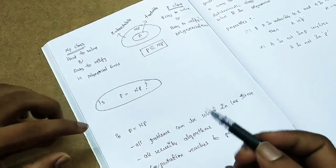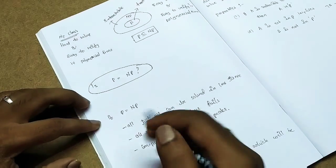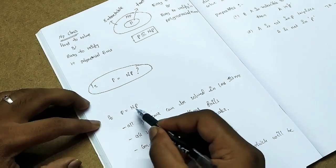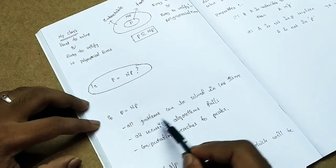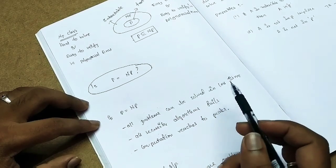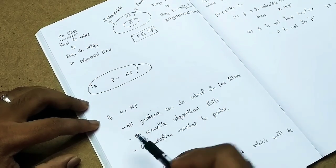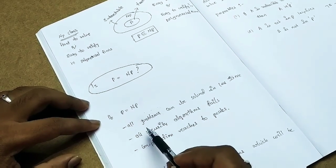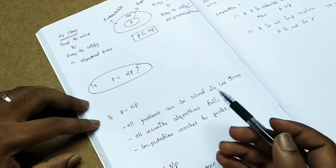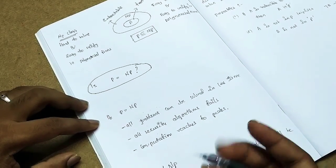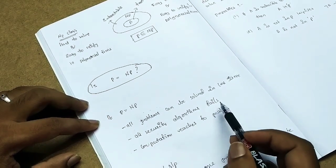What happens if we say P is equal to NP? What is the meaning? All problems can be solved in less time. If NP problems could be solved easily — very easily — then all security algorithms would fail.